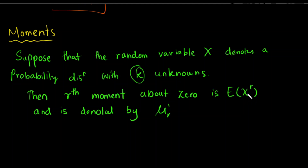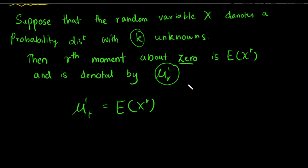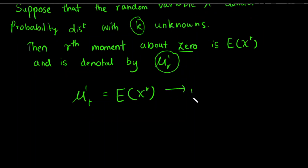The expected value of x to the power r defines the population moments. Now we can define the values of x to the power r. We will talk about the mean and the population moment.